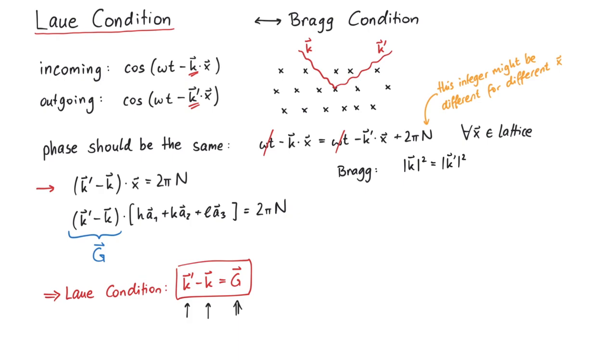Therefore, k-squared is the same as k-prime-squared. If we write the Laue condition as k being equal to k-prime minus g, we can square this equation and subtract k-squared from both sides, since it's equal to k-prime-squared.